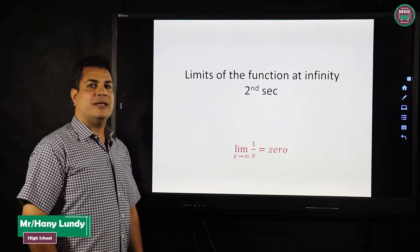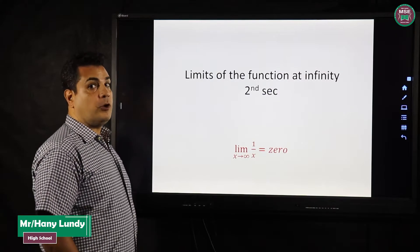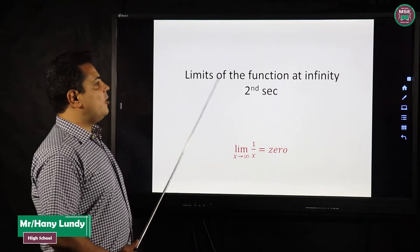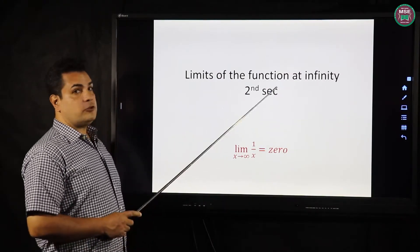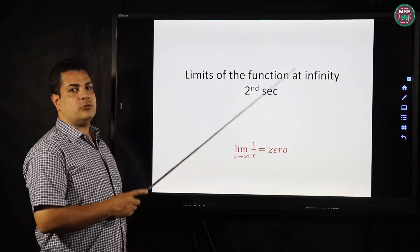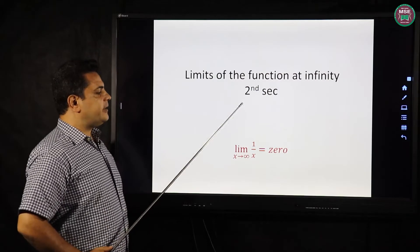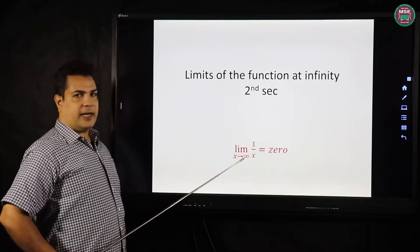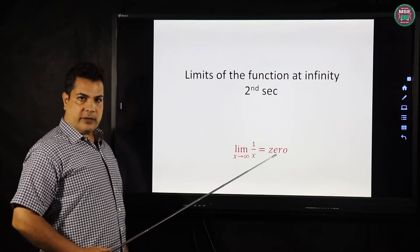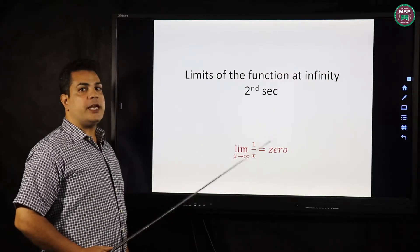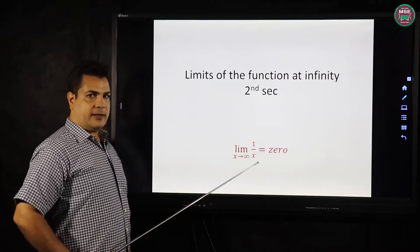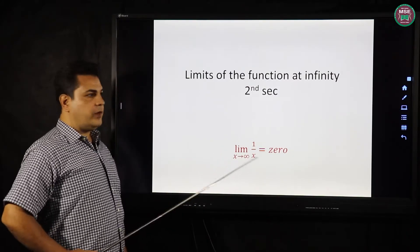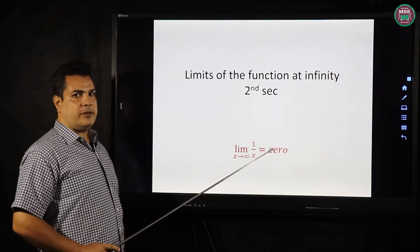Hello. The second lesson of limit. Limit of the function as x tends to infinity. The key rule: the limit of 1 over x as x tends to infinity equals 0, or any number over x where x tends to infinity equals 0.